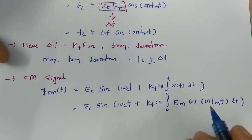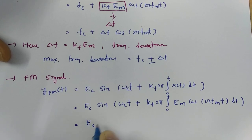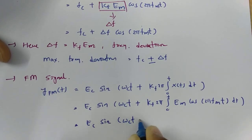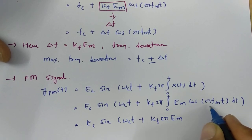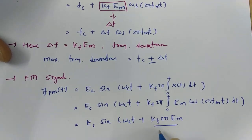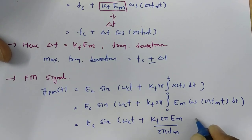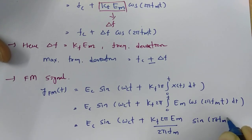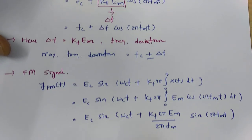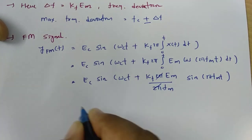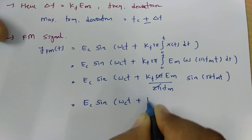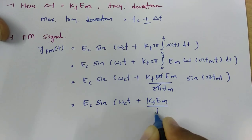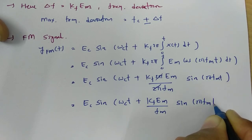Performing this integration, Em is a constant and can be taken outside. The integral of cos gives sin, divided by the constant 2π fm. The 2π terms cancel, giving us the equation as Ec·sin(ωc t + (Kf·Em / fm)·sin(2π fm t)).